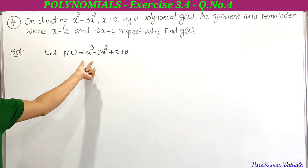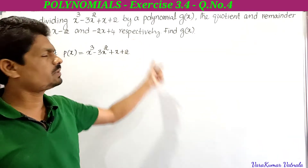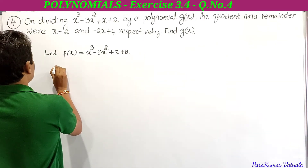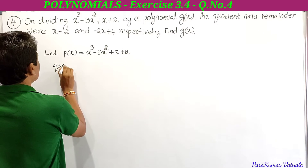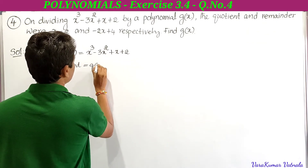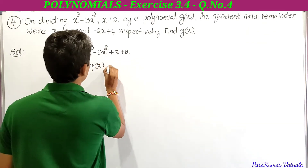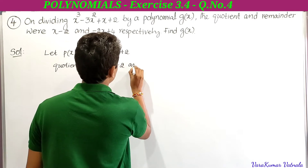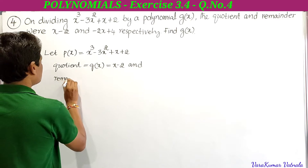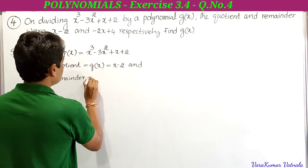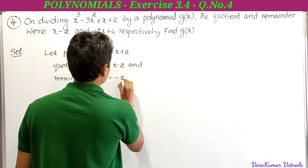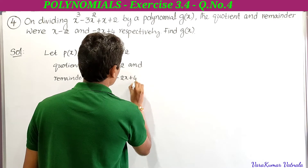Let p(x) = x³ - 3x² + x + 2. We have to find g(x). Let q(x) = x - 2 and let r(x) = -2x + 4.